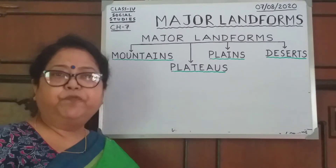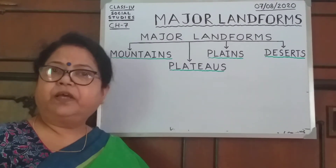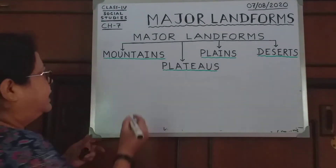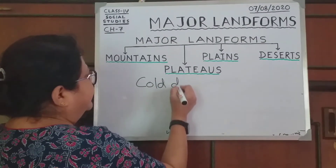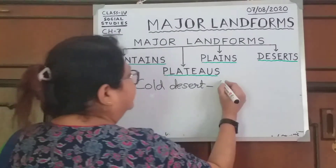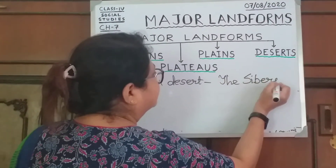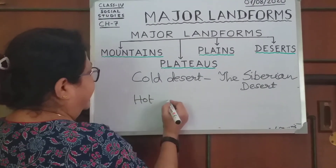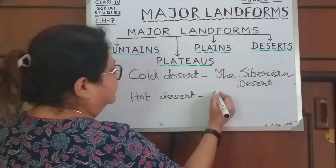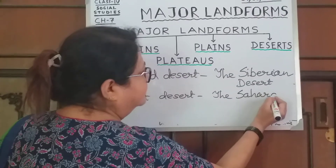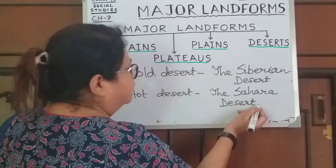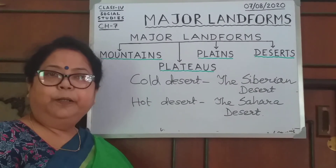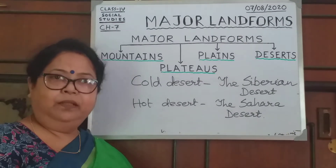The life of the people in the deserts is very difficult because there is very little water. There are two types of deserts: cold deserts and hot deserts. Example of a cold desert: the Siberian desert. Example of a hot desert: the Sahara desert, or the Thar desert of India. Very few plants grow in the desert region — only cactus and similar plants can be found in the desert areas.